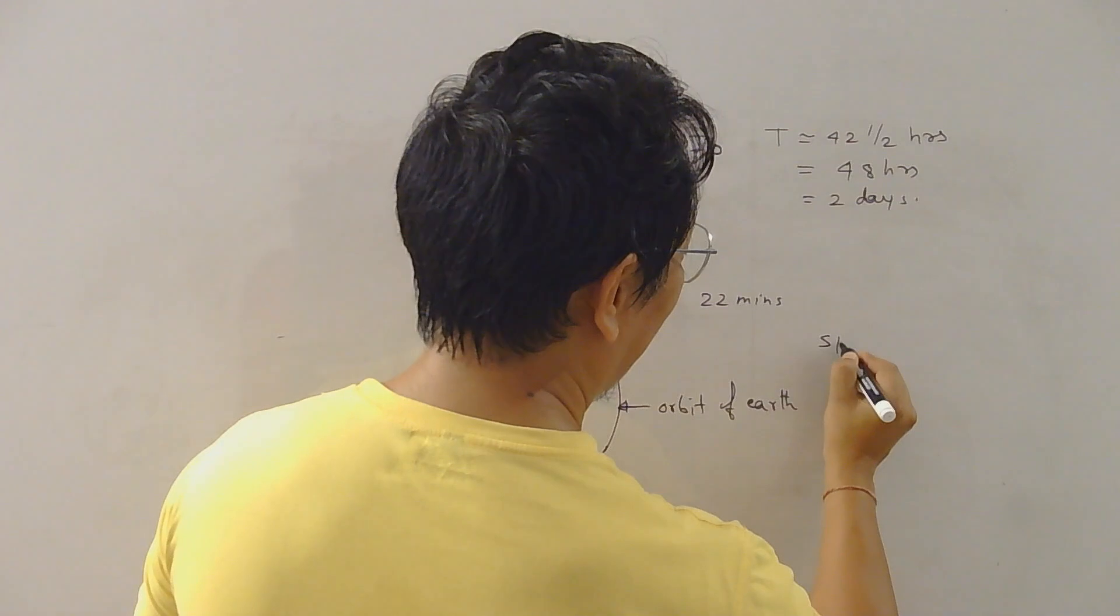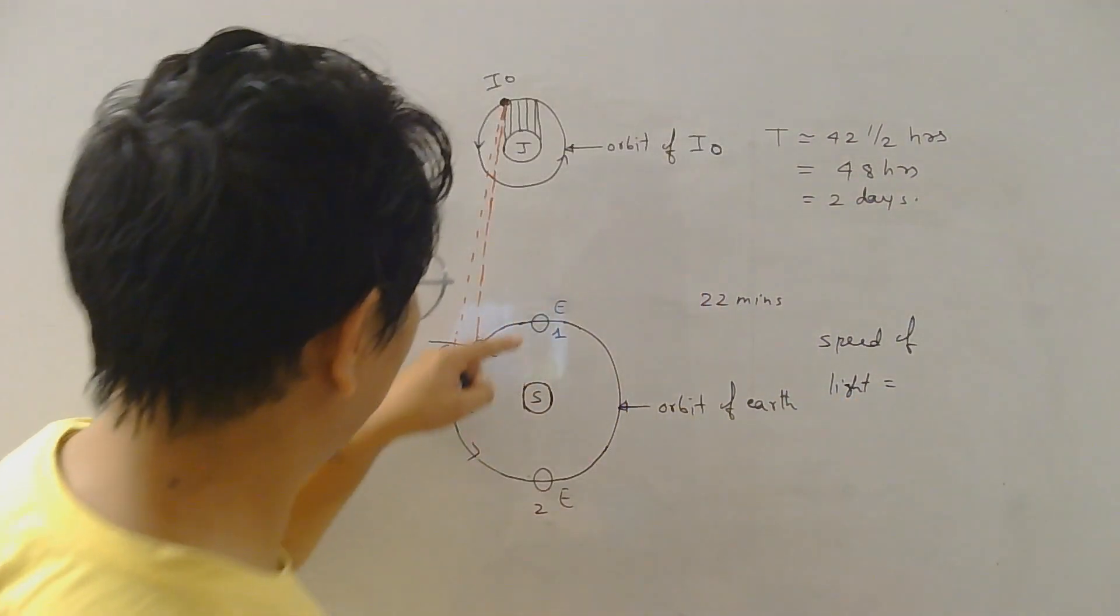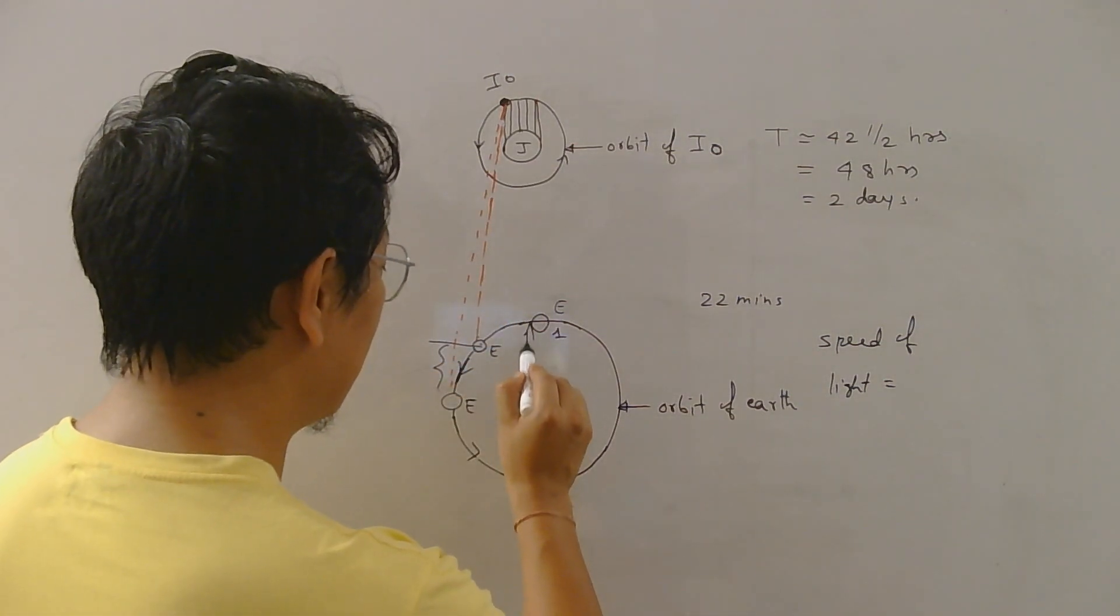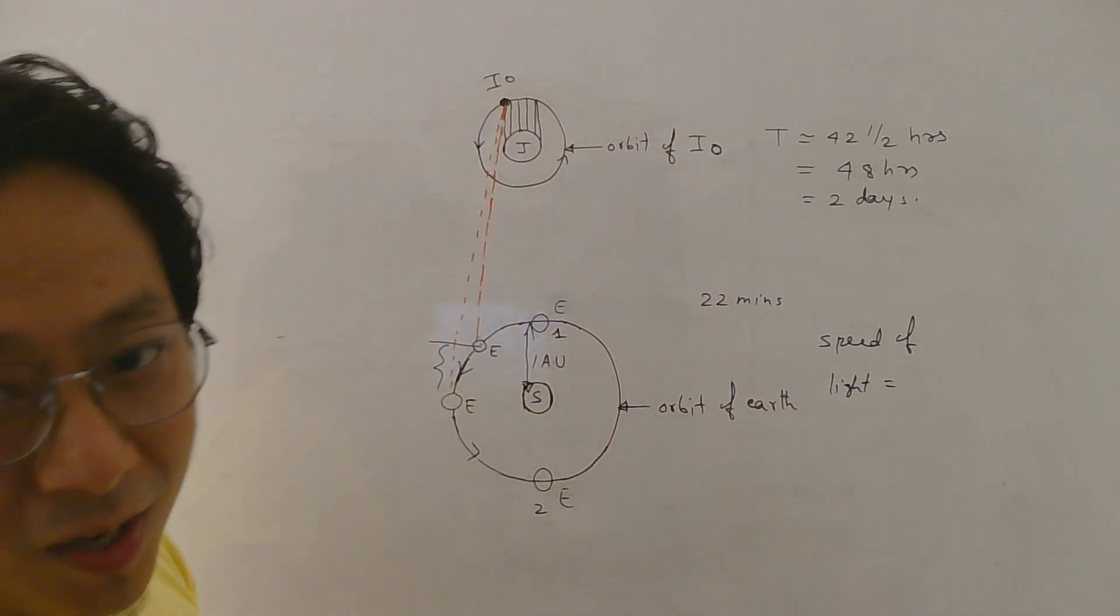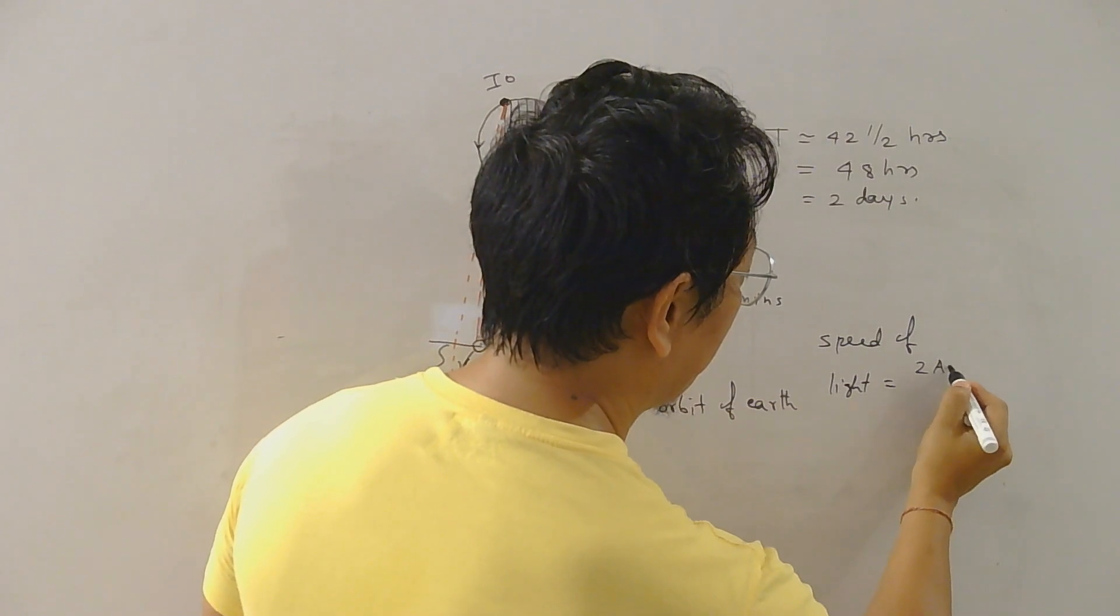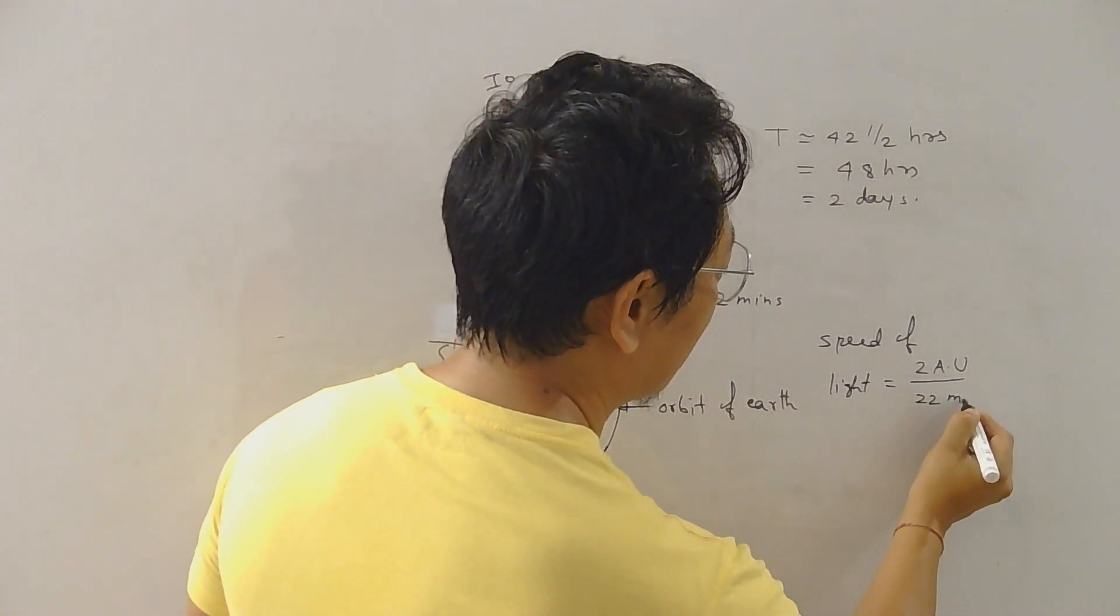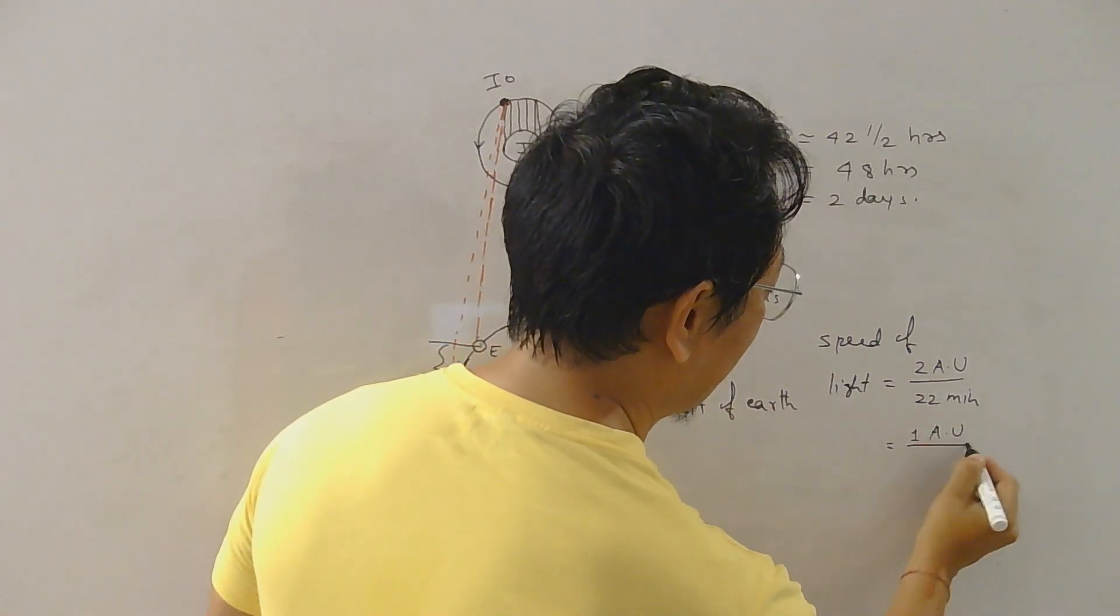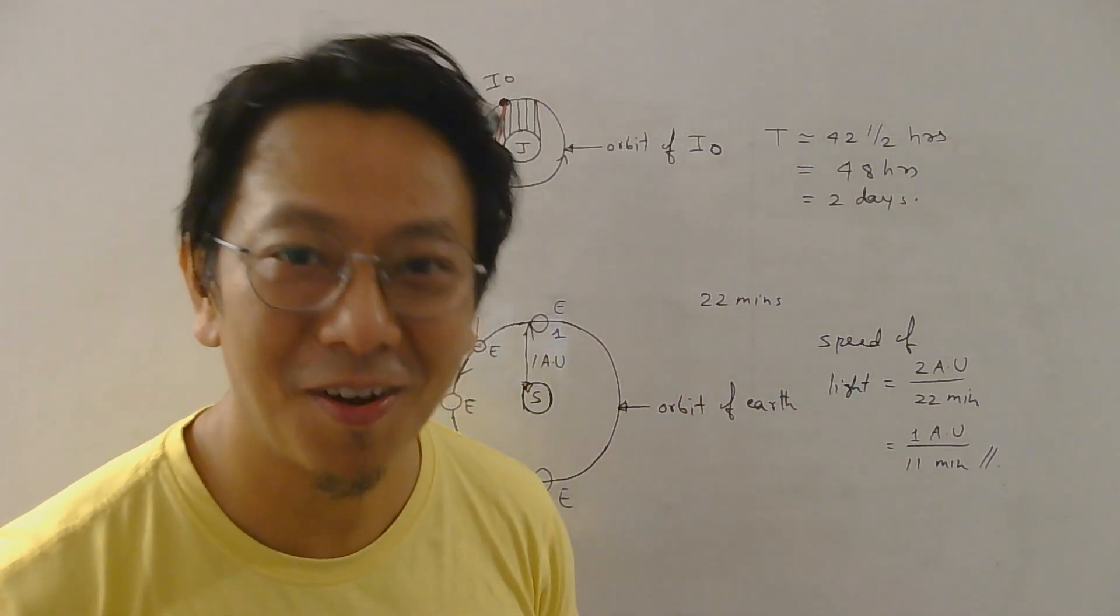So the speed of light would be the extra distance covered, which would be this distance. Now this distance between earth and sun is what we write as one astronomical unit, 1 AU. So this distance would be 2 AU divided by the time taken which is 22 minutes, which is one astronomical unit by 11 minutes. So this is clearly not infinite.